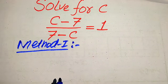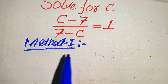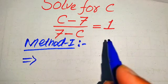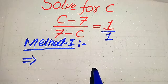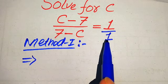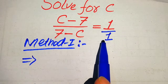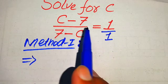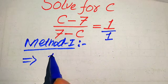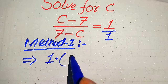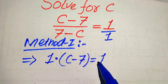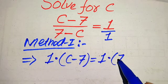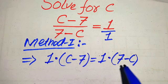In the first method, you need to focus on the right hand side. The denominator of that term is 1, so now we cross multiply the terms. When you cross multiply, we multiply 1 with each value, and it will be written as 1 multiplied by c minus 7 is equals to 1 multiplied by 7 minus c.